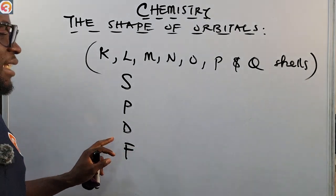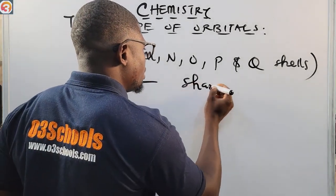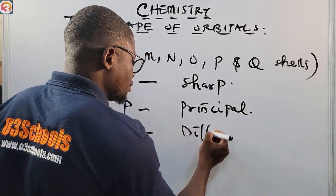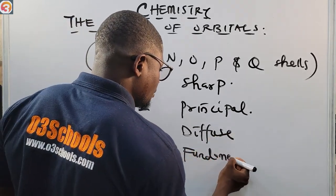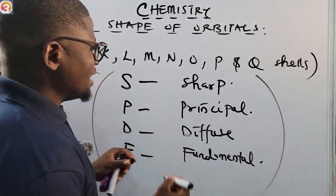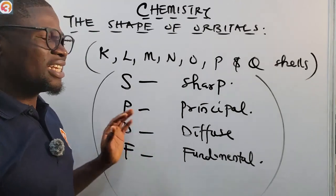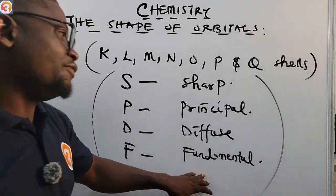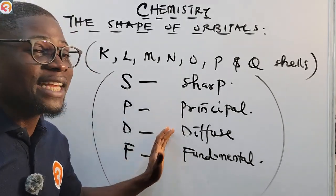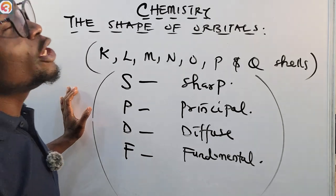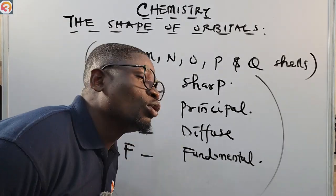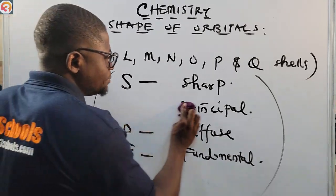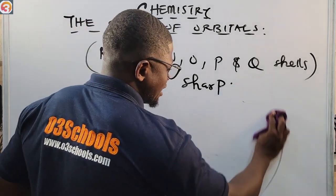The letters S, P, D, F stand for: S is Sharp, P is Principal, D is Diffuse, and F is Fundamental. Take note — Sharp, Principal, Diffuse, Fundamental. You can form a song or any mnemonic to help you remember them. Sharp, Principal, Diffuse, and Fundamental.